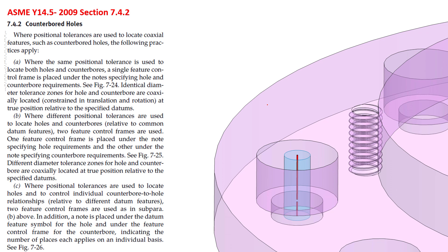Now identical diameter tolerance zones for the hole and counterbore are coaxially located — constrained in translation and rotation — at true position relative to the specified datums. That's why we can see here that this tolerance zone is a singular tolerance zone. If you'd rather picture it as two tolerance zones that are the same size and coaxial, you're more than welcome to. We also see other scenarios in B and C where you can change up the design intent by allowing more position for the feature that you want to have more position tolerance.